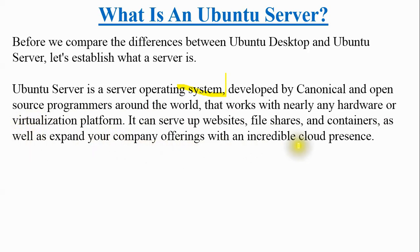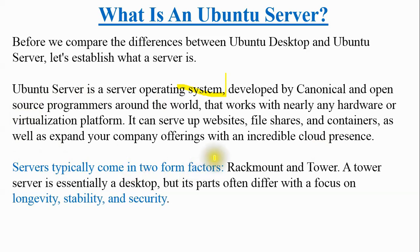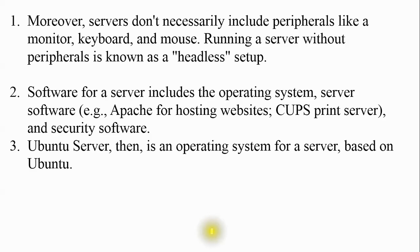Servers typically come in two form factors: rack-mounted and tower. A tower server is essentially a desktop server, but its parts differ with a focus on longevity, stability, and security. Servers use error-correcting code (ECC) RAM, whereas non-server desktops do not. If you are using a desktop operating system you will not have ECC RAM — that is a small but important difference.